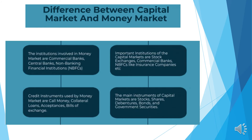Next, the institutions involved in money market are commercial banks, central banks, and non-banking financial institutions, commonly called NBFCs. On the other hand, important institutions of the capital market are stock exchanges, commercial banks, and NBFCs like insurance companies.